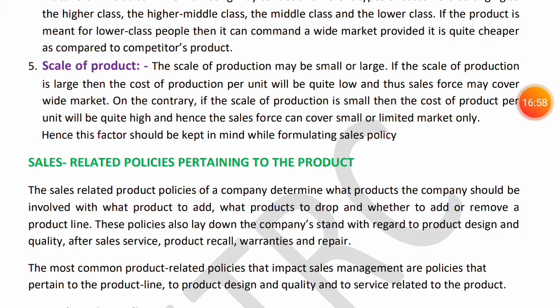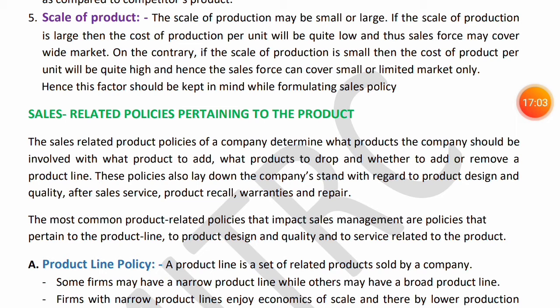So these are the factors to consider when making sales policies. Next is Sales-Related Policies Pertaining to the Product. The company decides what products to include or exclude, which product lines to add or remove, product design, after-sales service, product recall, warranty, and repair procedures. Decisions regarding all of these are what we call sales-related policies pertaining to the product.